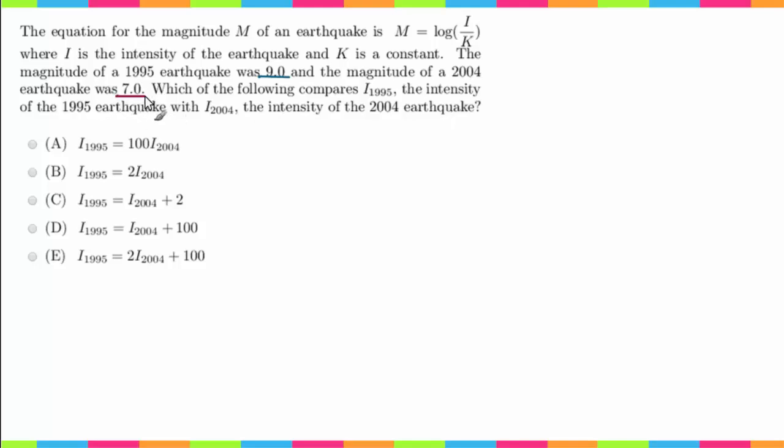So the first thing I'm going to do is go ahead and just plug in those two pieces of information into our equation. So for the 1995 one, I'm going to have 9 is equal to log of I sub 1995 over K. And now for my second one, I'm going to have 7 is equal to log of I sub 2004 over K.